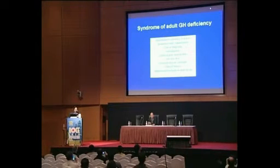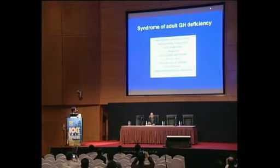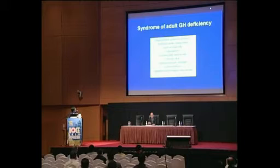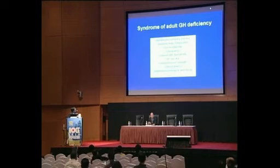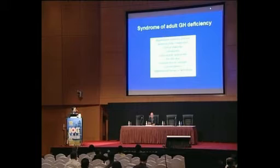We now recognize that adults lacking growth hormone have a cluster of clinical characteristics. Generally speaking, they have hypothalamic pituitary disease as a primary cause, abnormal body composition, truncal adiposity, osteopenia, unfavorable lipid profile, thin dry skin, reduced muscle strength and fitness, and impaired psychological well-being.